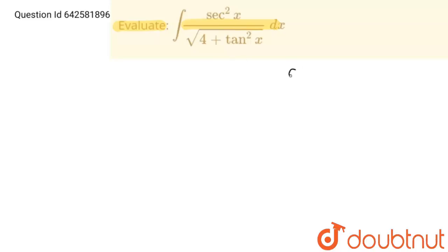In this question I am going to use formula dx upon square root a square plus x square integration is equal to ln x plus square root x square plus a square mod plus c.